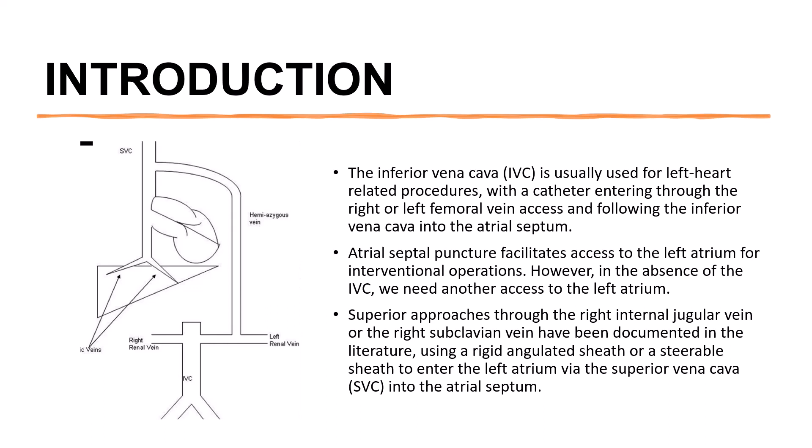However, in the absence of the IVC, we need another access to the left atrium. Superior approaches through the right internal jugular vein or the right subclavian vein have been documented in the literature, using a rigid angulated sheath or steerable sheath to enter the left atrium via the superior vena cava into the atrial septum.